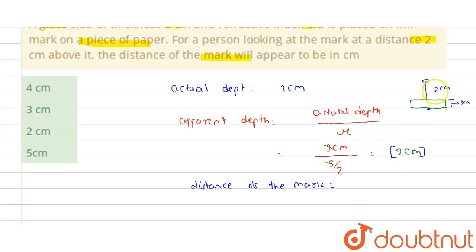That is 2 cm plus 2 cm, which equals to 4 cm. That is option 1 is the correct answer.